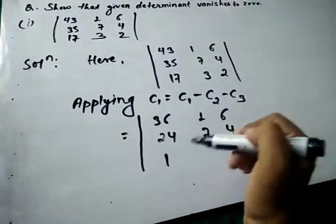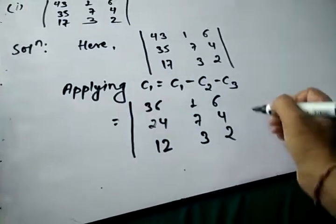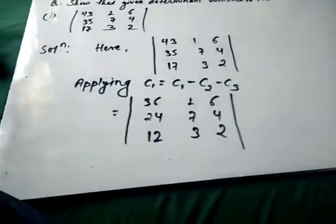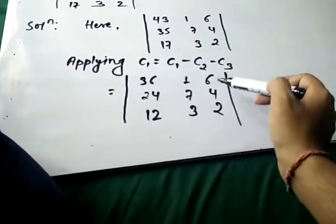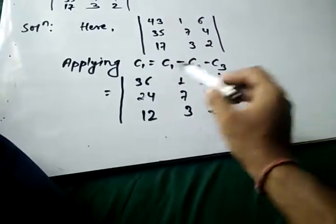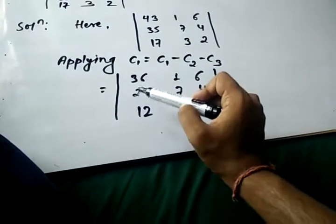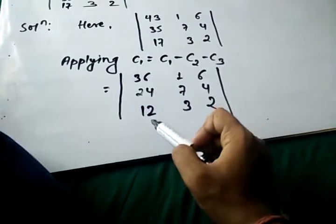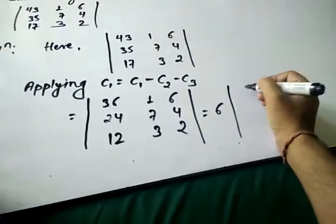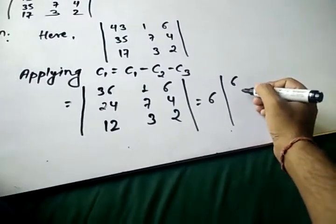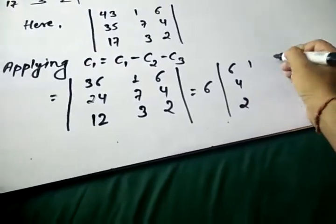So the new column 1 values are 36, 24, and 12. We can take 6 as a common factor: 6×6=36, 6×4=24, 6×2=12. Taking 6 common from column 1, the determinant becomes 6 times a new determinant.